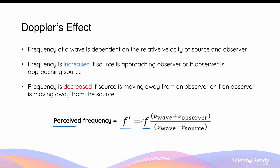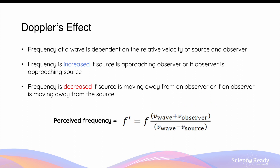The perceived frequency is equal to the original frequency of the wave multiplied by this fraction. In the numerator, we have the velocity of the wave — that is, the velocity of the wave unaffected by the Doppler effect. For example, the velocity of sound in air is roughly 340 meters per second, and the velocity of light in a vacuum is 3 times 10 to the power of 8 meters per second — plus the velocity of the observer. This is all divided by the denominator, which is the velocity of the wave minus the velocity of the source.